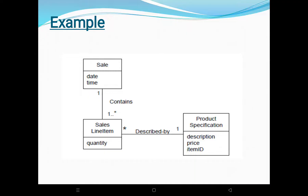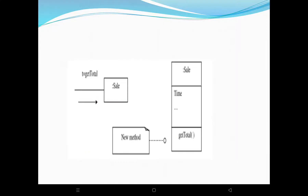We will see one example. In this POS application, some class needs to know the grand total of the sale. Consider the partial domain model. Here, the software class Sale is added with the responsibility of getting the total. So Sale is responsible for getting the total with the method getTotal().